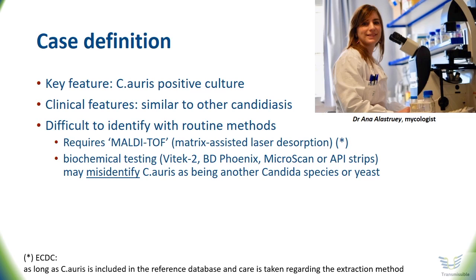That is how you can misdiagnose this species. It is really important for laboratories to be aware that they need different tools to differentiate between Candida albicans and detect Candida auris. Depending on the platform used, it can be misidentified with other species.